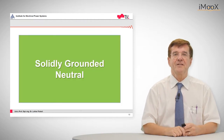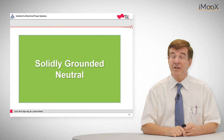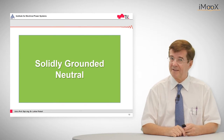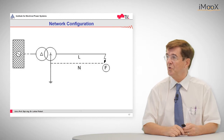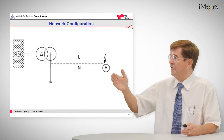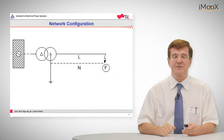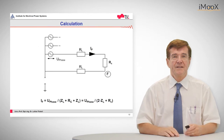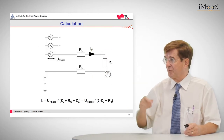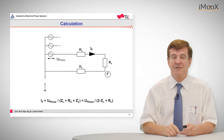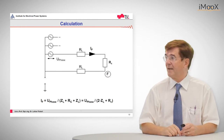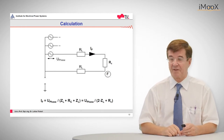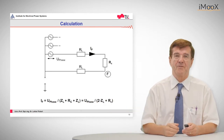Let's start with a solidly grounded neutral, as it is known to everybody, in the low voltage network as a start. In a low voltage network we have a transformer, a line, a neutral return path, and a fault. We have a current loop made up of two times the lead impedances and the fault impedance, and the formula of the whole thing is given below.